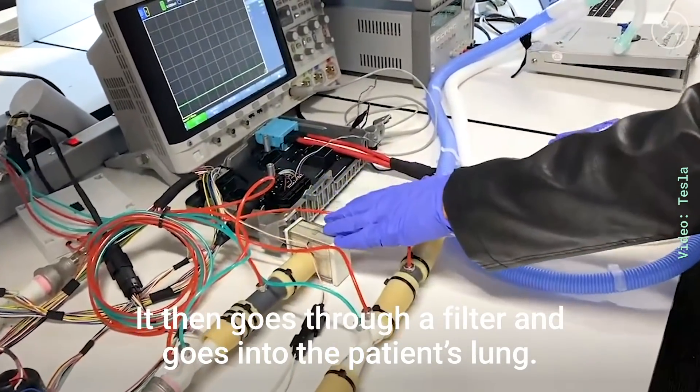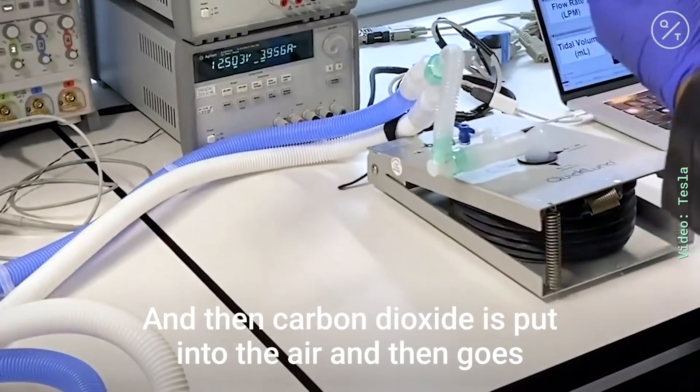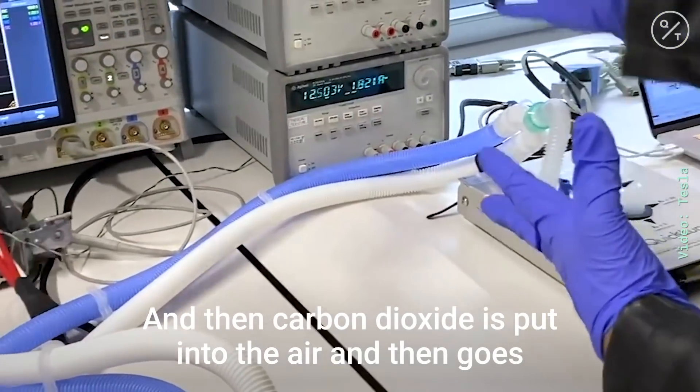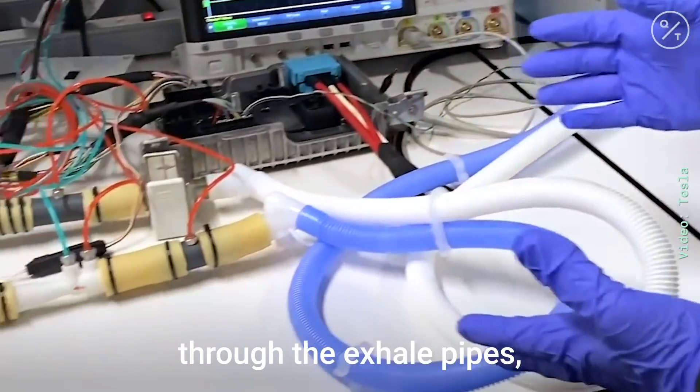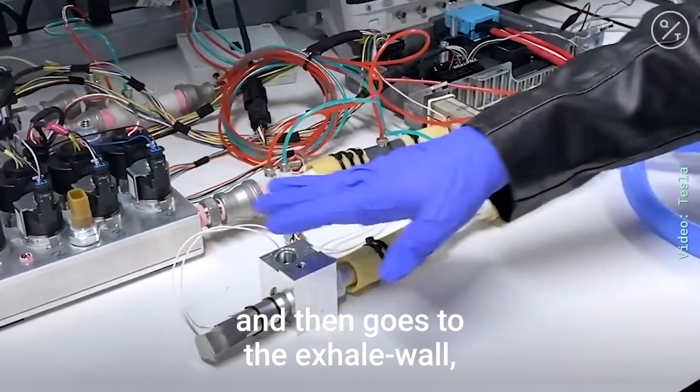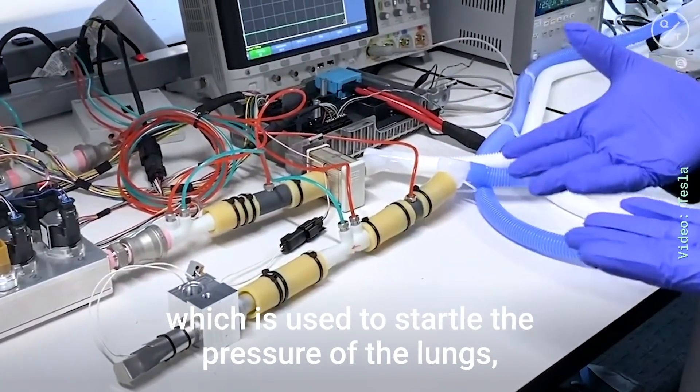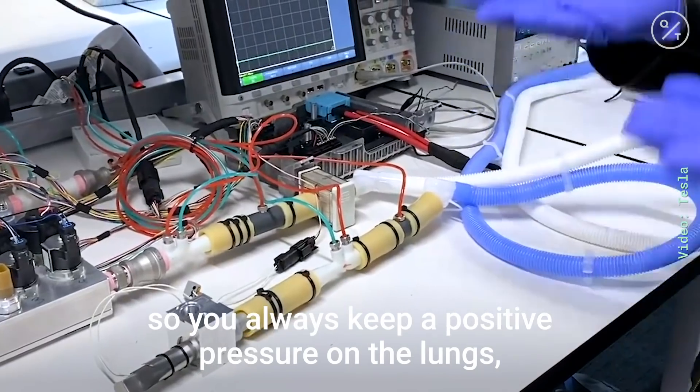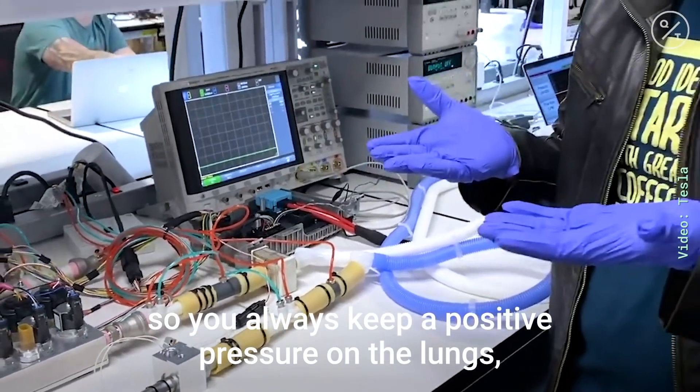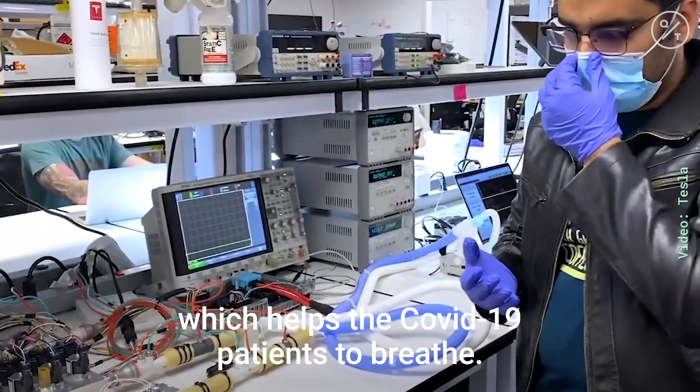It then goes through a filter and goes into the patient's lung and then carbon dioxide is put into that air and then goes through the exhale pipes and goes to a set of sensors and then goes to the exhale valve which is used to throttle the pressure of the lungs. So you always keep a positive pressure on the lungs which helps the COVID-19 patients to breathe, keeps their lungs open.